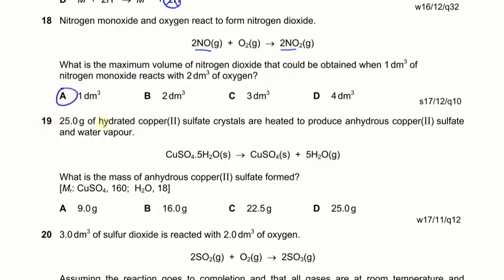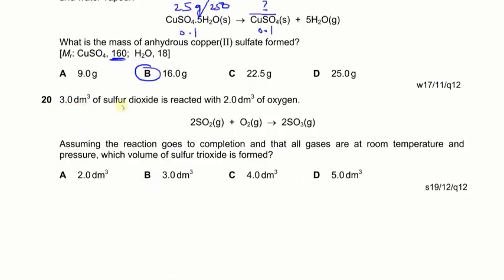Next: 25 grams of hydrated copper sulfate crystals (CuSO₄·5H₂O) are heated to produce anhydrous copper sulfate and water. What is the mass of anhydrous CuSO₄ formed? The molecular mass of CuSO₄·5H₂O is 250, so moles = 25 ÷ 250 = 0.1 moles. This gives 0.1 moles of anhydrous CuSO₄, and with a molecular mass of 160, the mass = 0.1 × 160 = 16 grams.